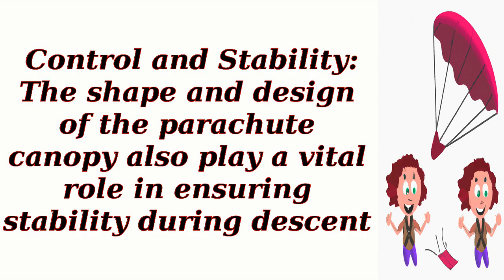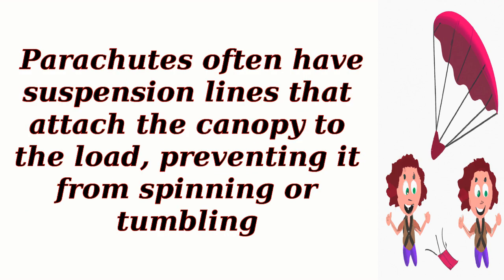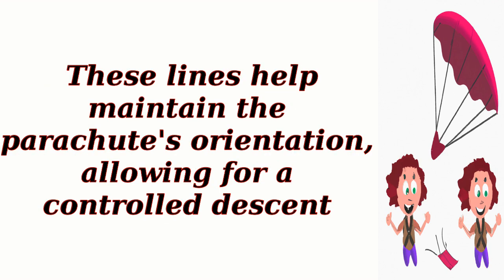Control and stability: The shape and design of the parachute canopy also play a vital role in ensuring stability during descent. Parachutes often have suspension lines that attach the canopy to the load, preventing it from spinning or tumbling. These lines help maintain the parachute's orientation, allowing for a controlled descent.